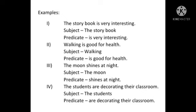'The moon shines at night.' What are we talking about? We are talking about the moon, so the subject is 'the moon,' and what we say about it — 'shines at night' — is the predicate. In the same way, 'The students are decorating their classroom.' Who are decorating their classroom? The students — so the subject is 'the students,' and what is said about them — 'are decorating their classroom' — is the predicate.